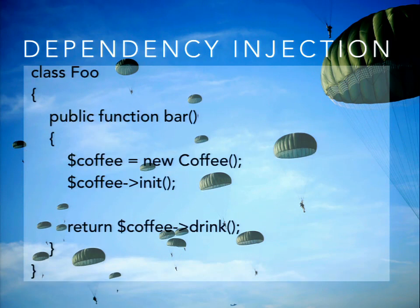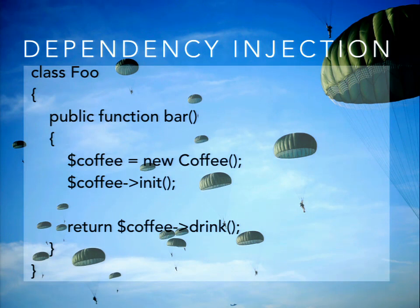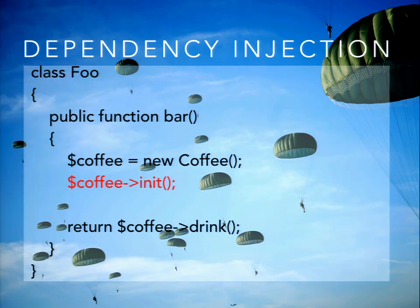A very simple example: if I have a class Foo with a public function Bar, I instantiate a new Coffee class inside it. The problem is, if I want to replace Coffee with something else — right now I'm not drinking coffee, I'm drinking water — that's going to be very hard, because everywhere in my code where I'm using the Coffee class, I'd have to change it. Also, the bootstrap happens right there in the class, which is a problem.